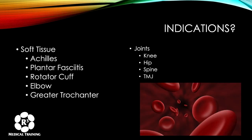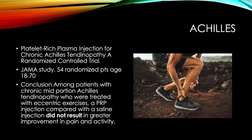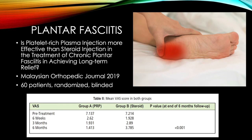Now we'll go through some indications and what the research shows — whether it's for soft tissue problems like Achilles tendonitis, plantar fasciitis, rotator cuff tendonitis, elbow and greater trochanteric bursitis/tendonitis, or joint arthritis and spine issues. For Achilles tendonitis, a study out of JAMA with over 50 patients aged 18 to 70 compared PRP injection for chronic mid-portion Achilles tendinopathy versus a saline injection, and it did not result in greater improvement in pain and activity — lending the argument against PRP for this type.